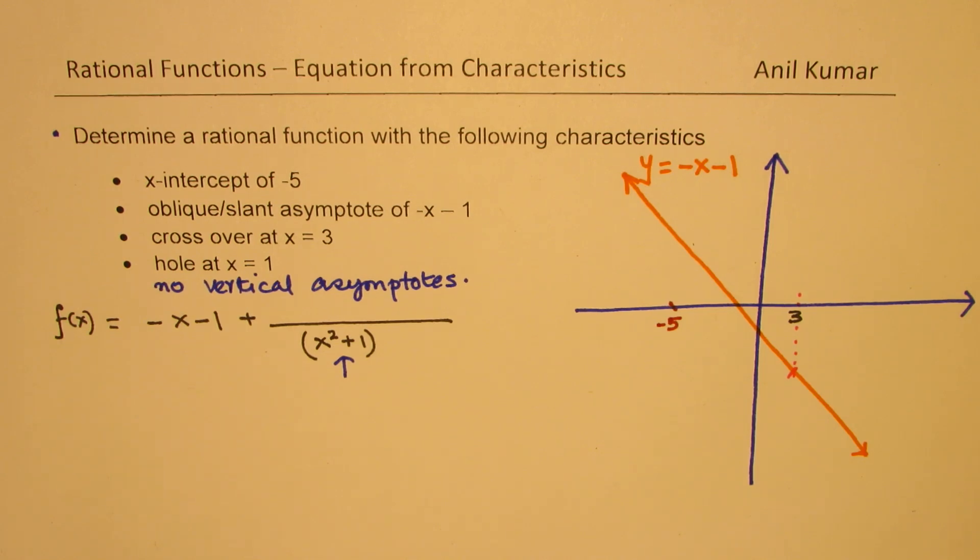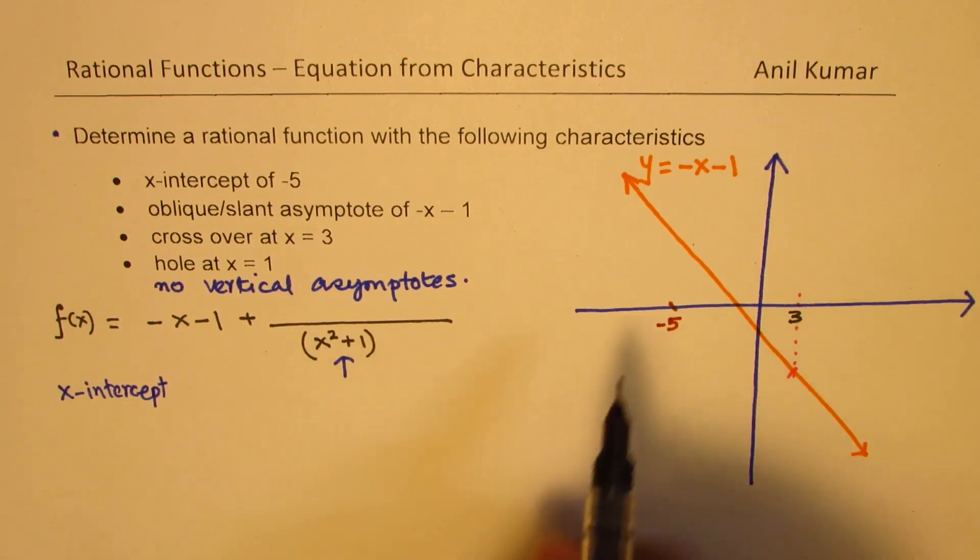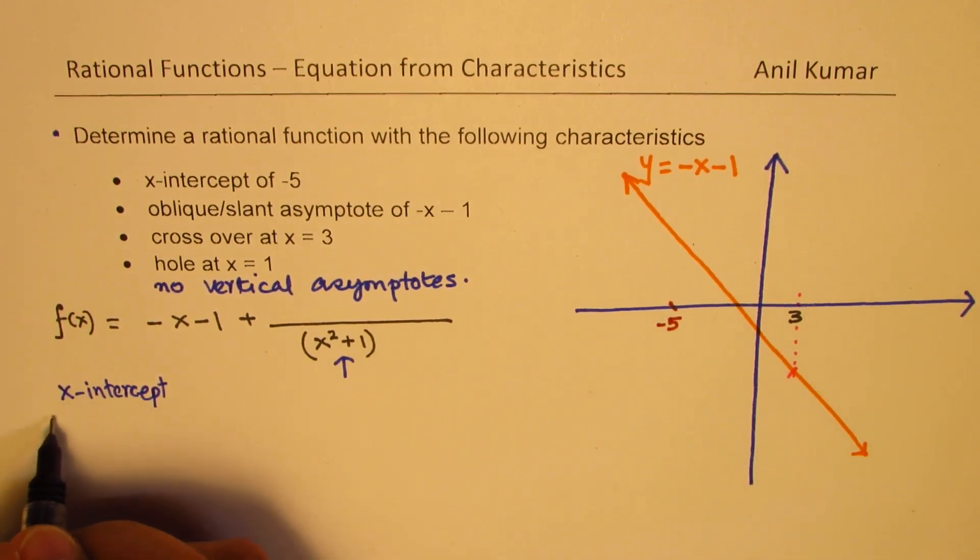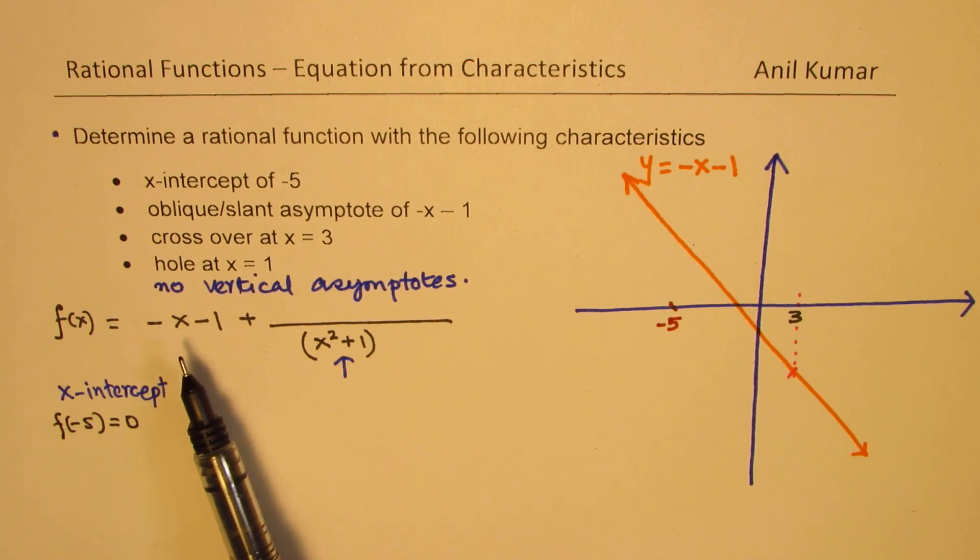Now, if I want this x-intercept, let's work for x-intercept now. So if I want x-intercept at minus 5, that means f of minus 5 should equal 0. Now, how do I get that value?